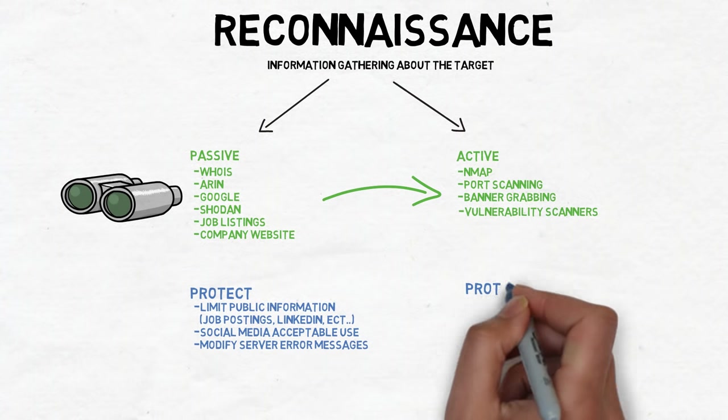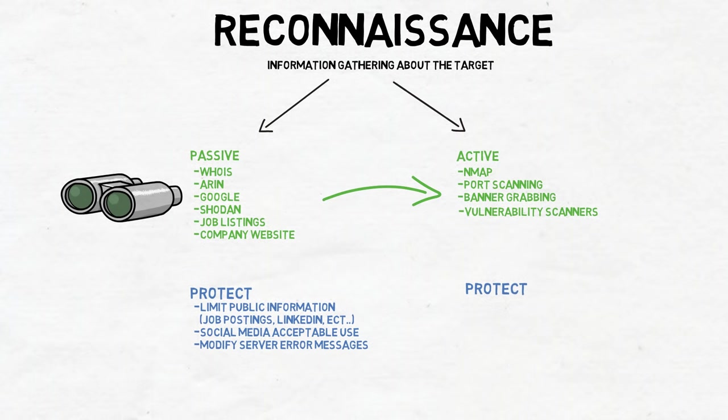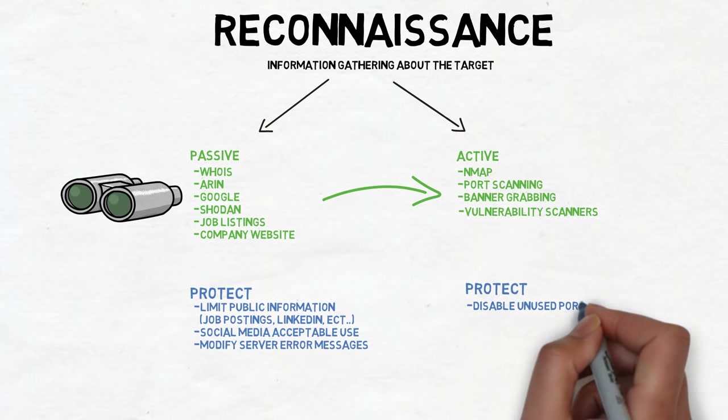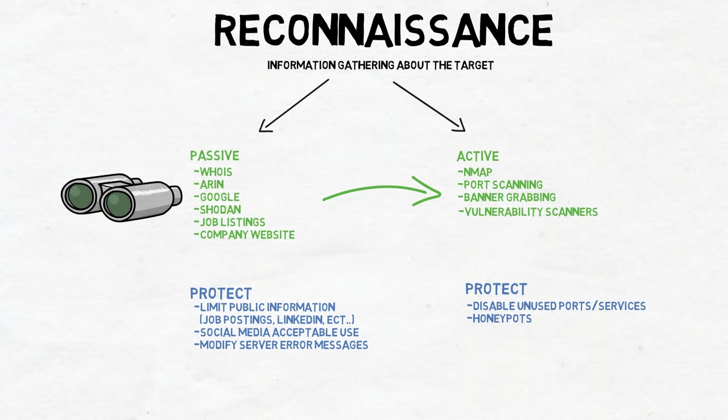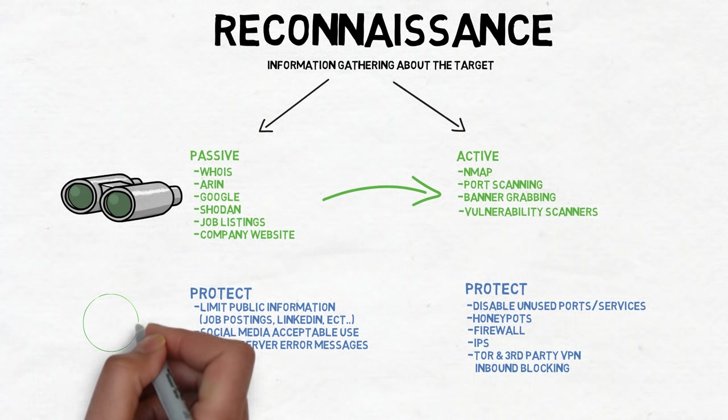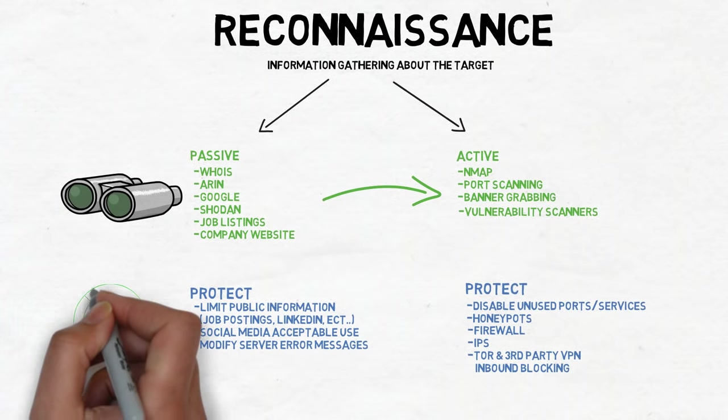Our first protective measure is to ensure that unused ports and services are disabled. This limits the number of entry points an attacker can use to get into your system. Honeypots are a great tool that can be used as a decoy against a would-be attacker. Not only do they divert attention away from real systems, but it also reveals what they're after and who they are. A firewall with IPS capabilities on the perimeter will provide filtering and segmentation, while also monitoring for port scans and banner grabs. Most next-generation firewalls can block connections from Tor networks and known proxy IP addresses, which are commonly used during this phase to obfuscate the real IP from an attacker.